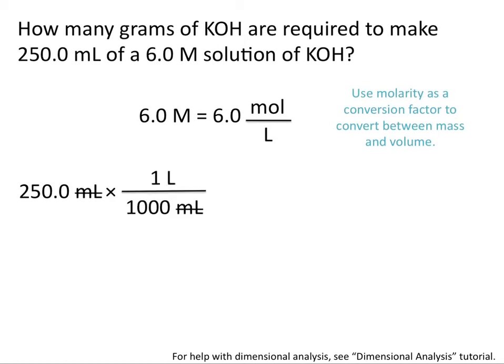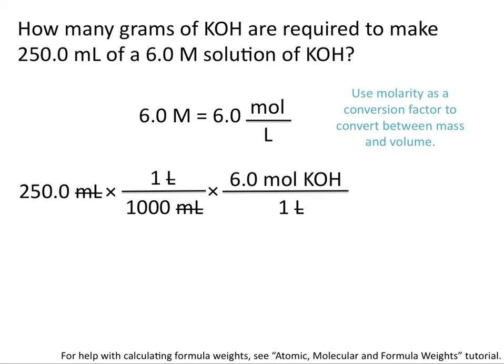When we cancel out milliliters, we'll see that we have units of liters, and this allows us to use our molarity value, 6.0 molar, or 6.0 moles per liter, to convert from liters to moles. Note that I wrote 6.0 moles on the top of potassium hydroxide per liter of potassium hydroxide. This is because I already had liters on the top, and I want liters to cancel out.